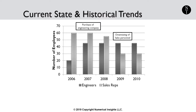The second step in the strategic workforce planning process is to establish the current state and the historical trends. Establishing the current state will include information on your existing headcount for the roles you have chosen to study.